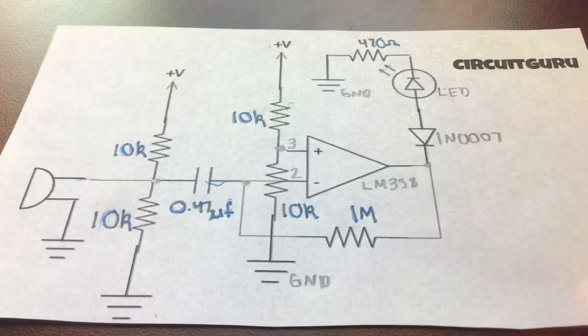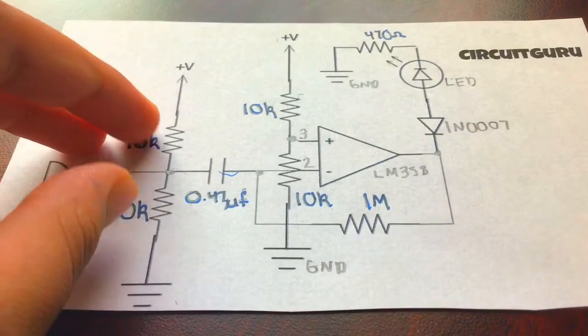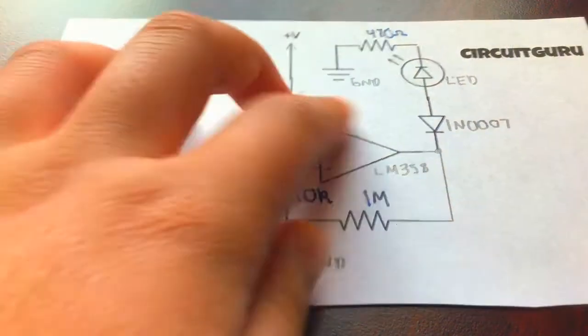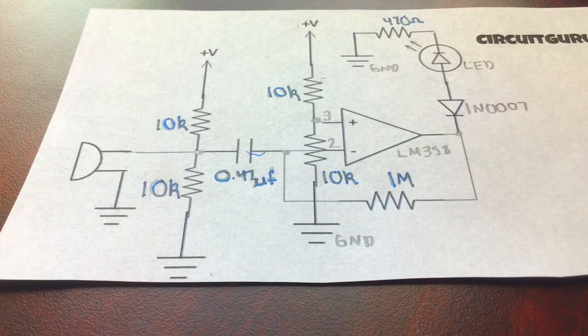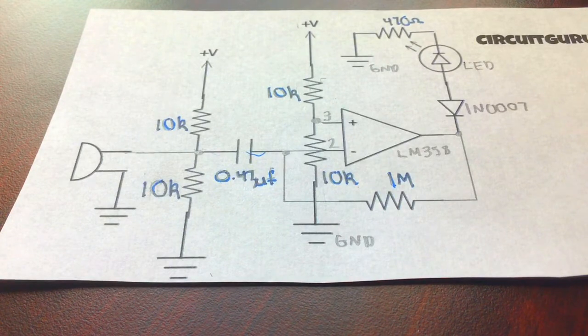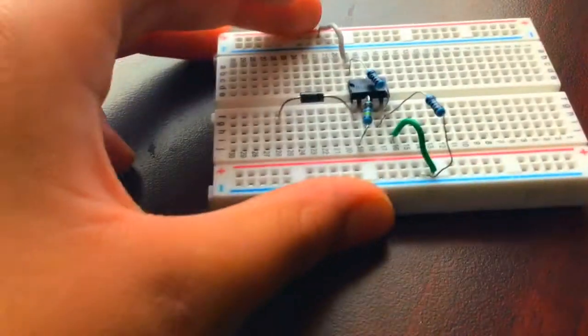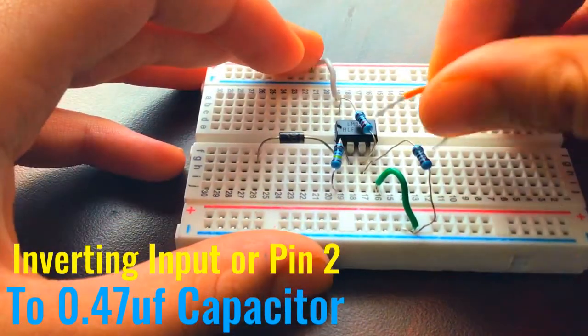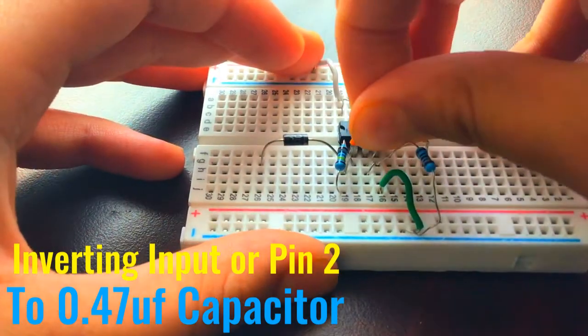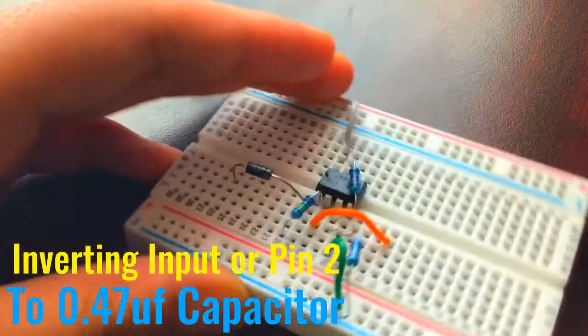Our next thing is that we need a capacitor to filter out excess noise that are coming from here, so it doesn't get confused. We're going to use a 0.47 microfarad capacitor to do this. We're going to take a wire and place it on the inverting input, or pin 2, just like this. Then we're going to take the capacitor and place one of its pins on that.